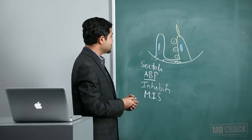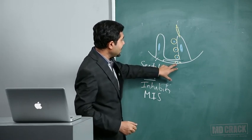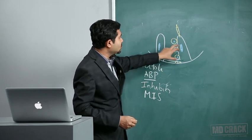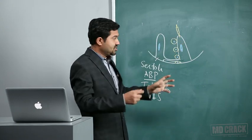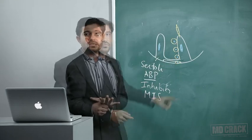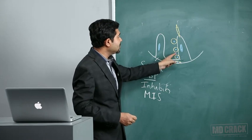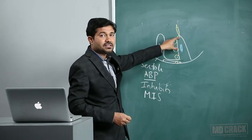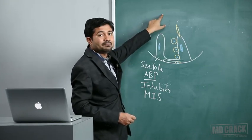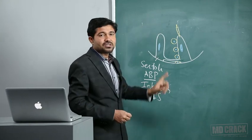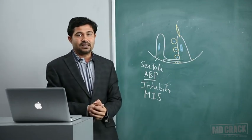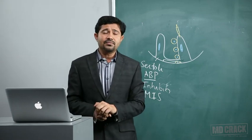Further functions of Sertoli cells: the spermatogonia, when they start dividing and forming gametes, must remain attached to the Sertoli cell. Junctions are continuously formed and then detached and new junctions formed. The important point is that the gametes must remain in contact with the Sertoli cells throughout development.